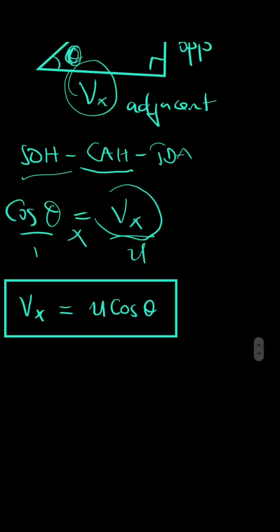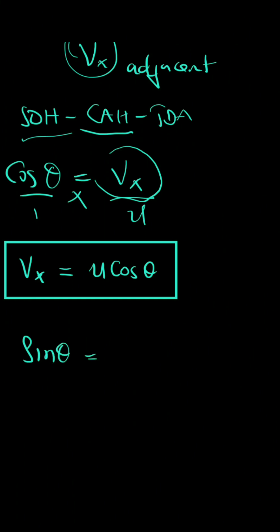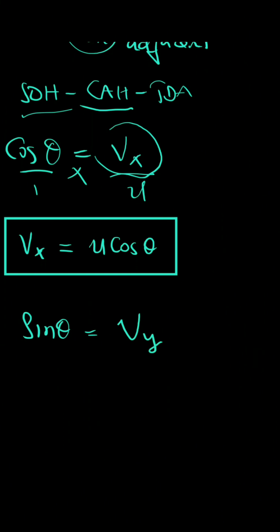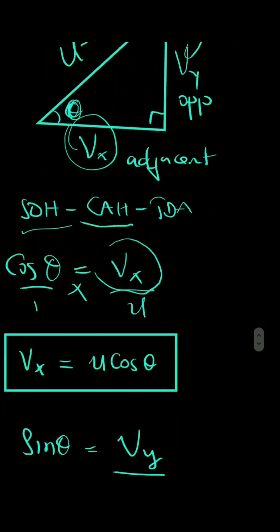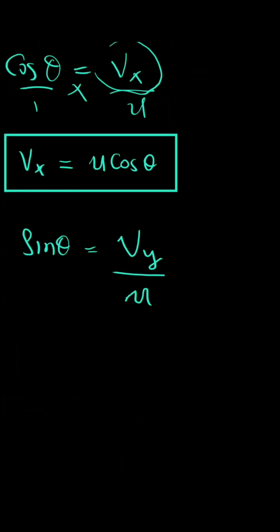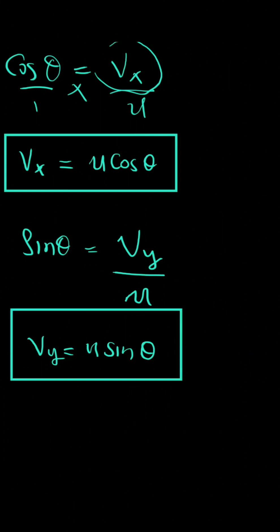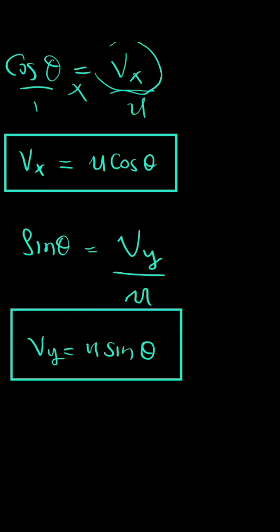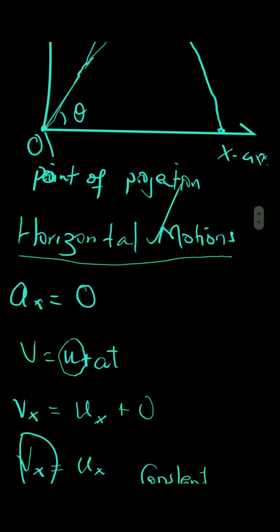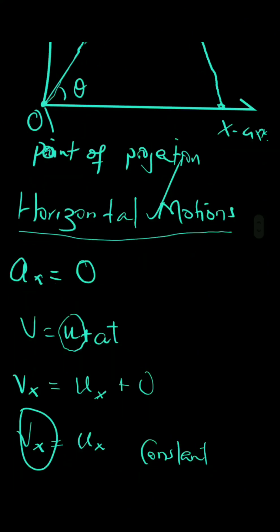Similarly, using the sine ratio for the y-component: sin(θ) = uy / u, therefore the y-component of velocity is uy = u·sin(θ). These are two very important equations. We can now consider looking at displacement in the horizontal axis.